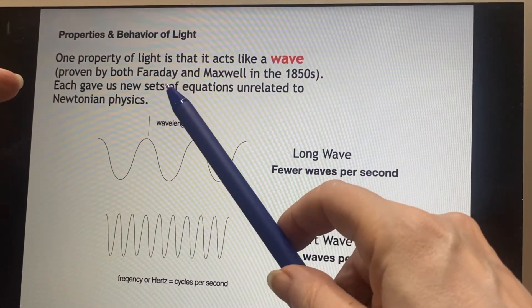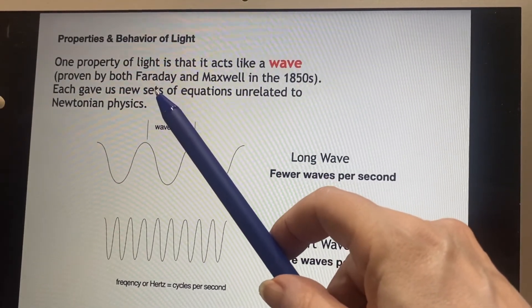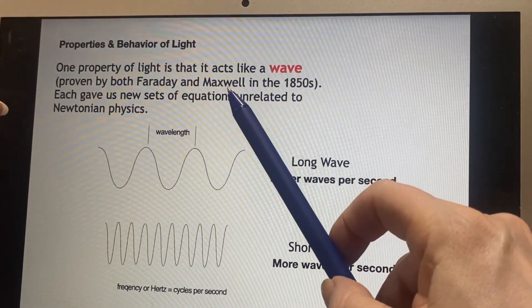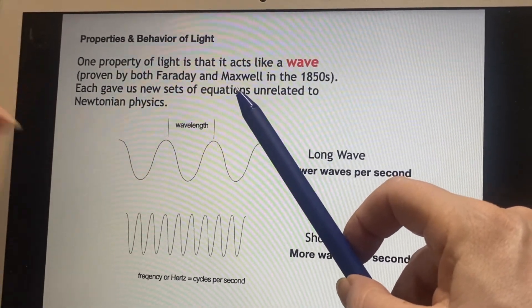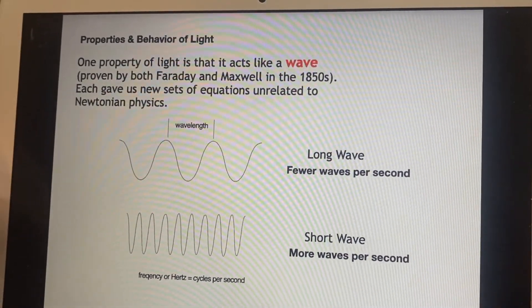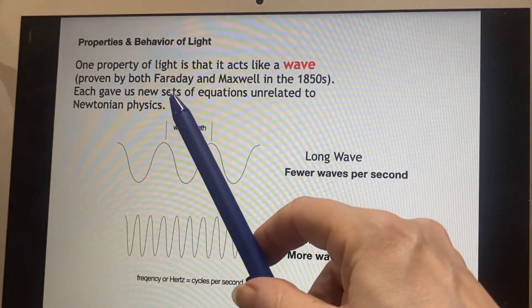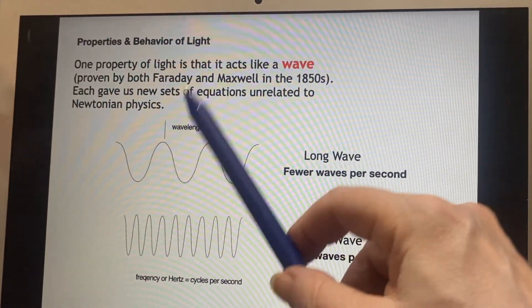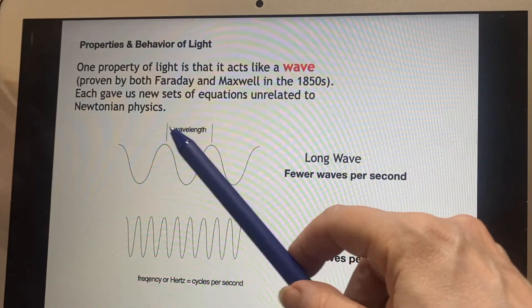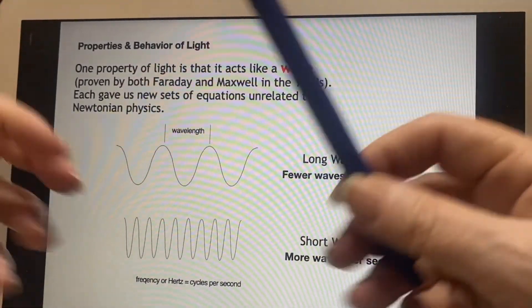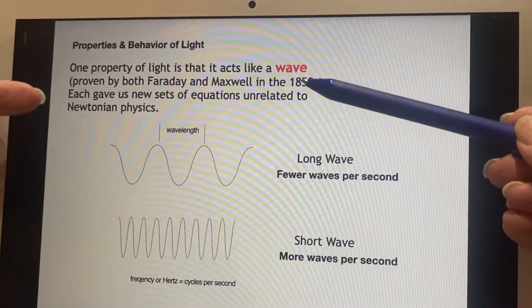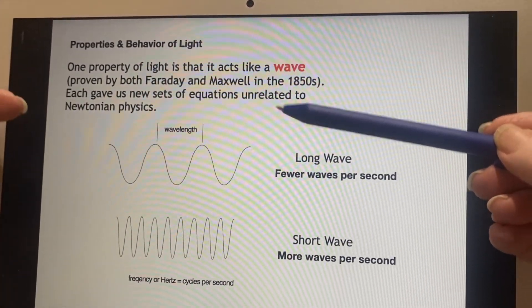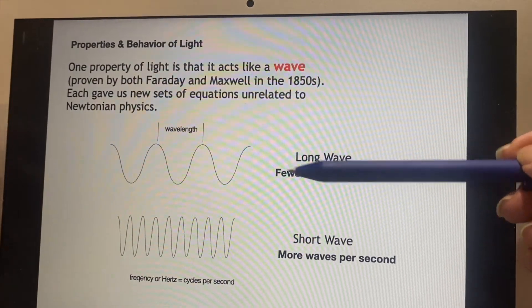Faraday worked on things first. Faraday was very focused on magnetics. Maxwell's the person who put together all the information from the different people who were working on both electricity and magnetism. So Faraday was one of the people that he visited and took into account all of his experiments when he put it all together. Both of them gave us new sets of equations that didn't have anything to do with the physics that Newton had put together earlier.